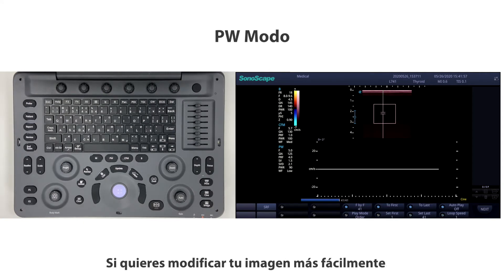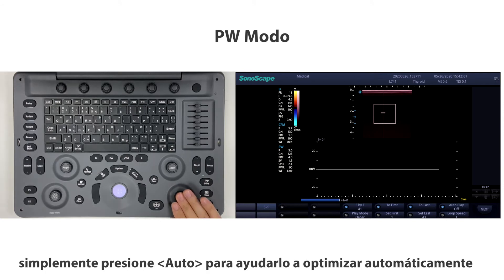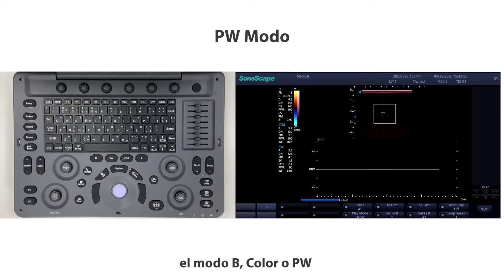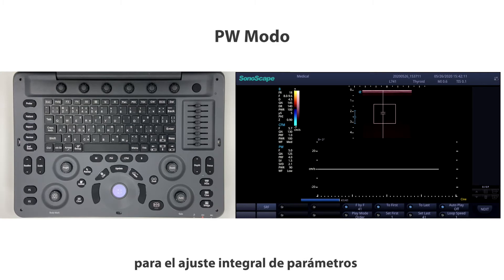If you want to optimize your image more easily, press AUTO to automatically optimize B, color, and PW modes. It saves your time for comprehensive parameter adjustment.